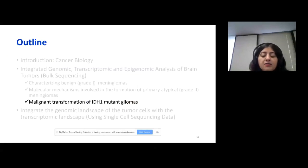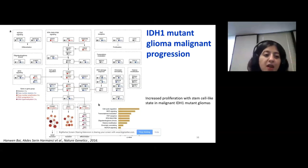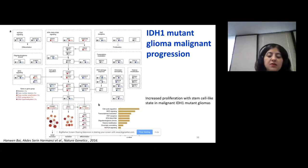We had another study where we tried to identify the molecular mechanisms involved in malignant transformation of IDH1 mutant gliomas. We observed similar findings — increased proliferation with stem cell-like state in malignant IDH1 mutant gliomas, as well as different genes or pathways that are abnormal in malignant IDH1 mutant tumors.